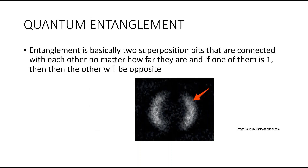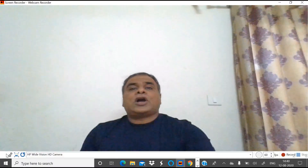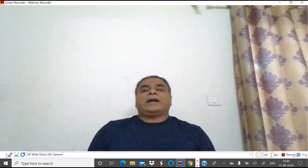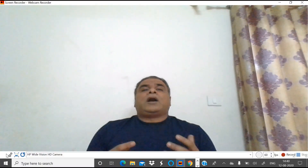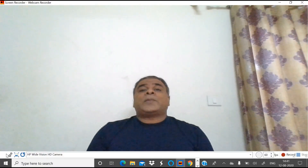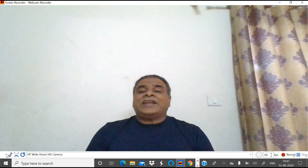The next phenomenon we need to understand is quantum entanglement. Quantum entanglement is the name given to a special connection between pairs or groups of quantum systems, or any objects described by quantum mechanics.